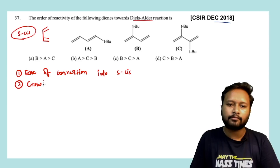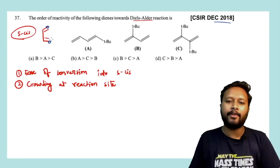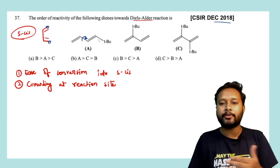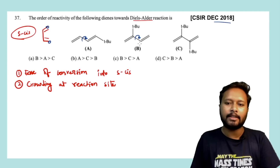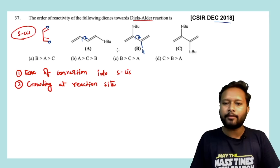There are two factors deciding reactivity toward the Diels-Alder reaction. The first is the ease of conversion into S-cis conformation. The second is crowding at the reacting site. The reaction sites are these two terminal carbons. Option A can easily undergo rotation along the sigma bond to convert from S-trans to S-cis. Option B also undergoes this rotation easily because although it has a bulky group on one side, there is only hydrogen on the other side, so rotation is not hindered much.